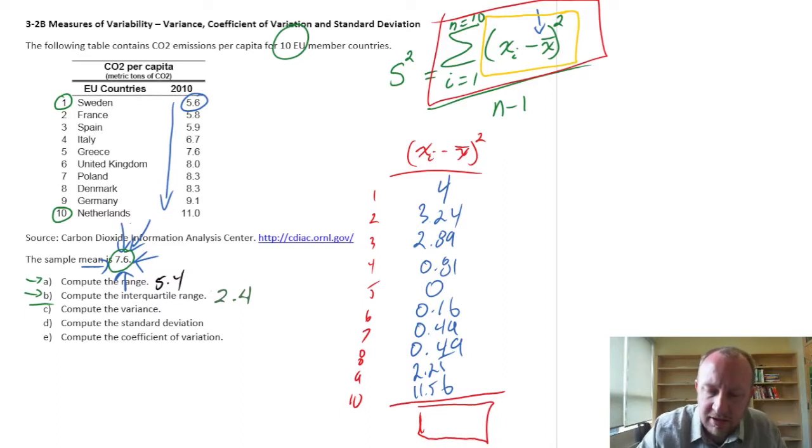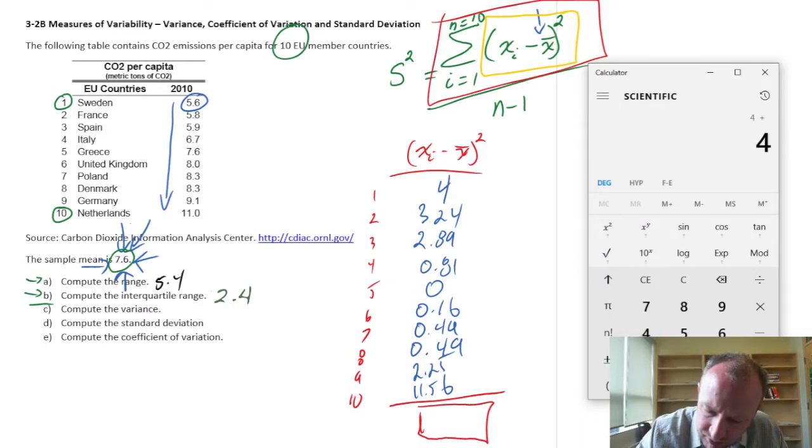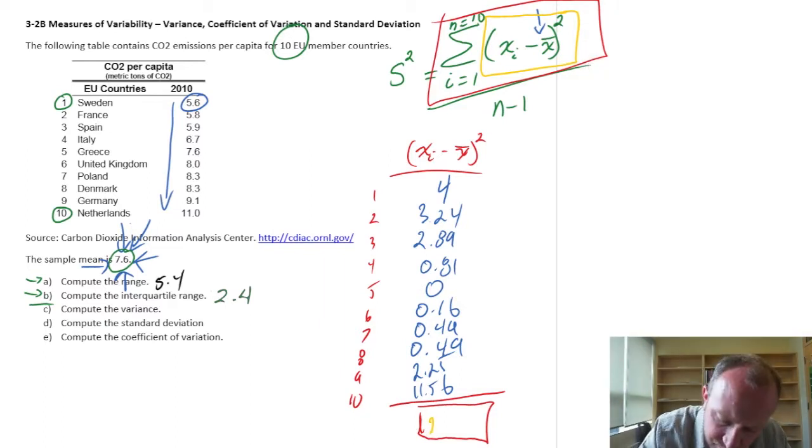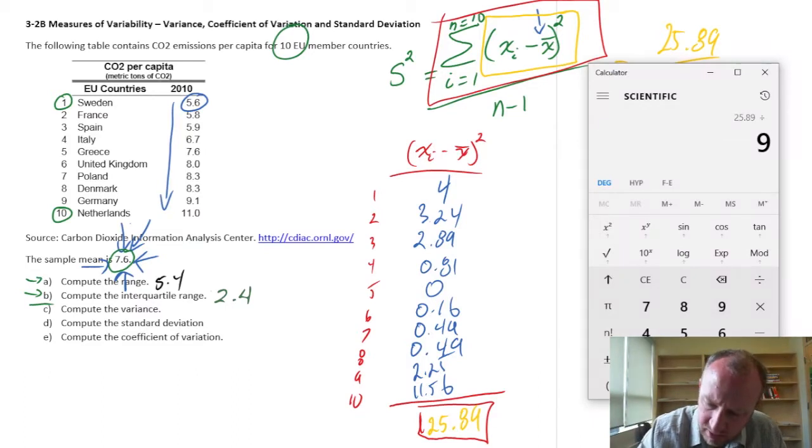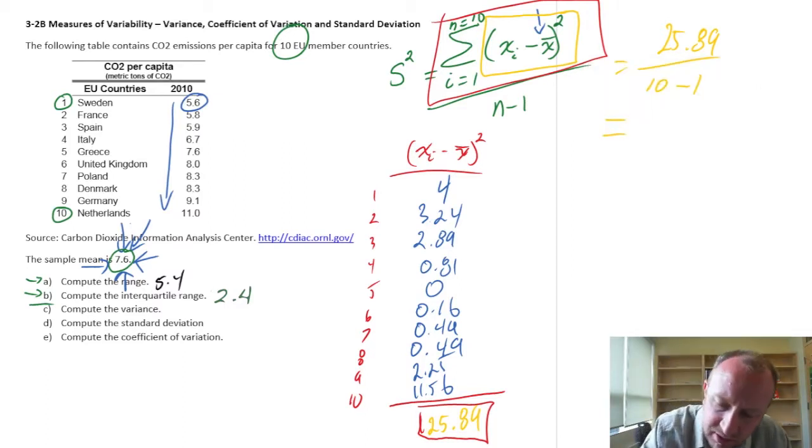So we've calculated what's in the yellow rectangle, now we're going to add all of those together, and that will give us our numerator. So if I start at the top, 4 plus 3.24 plus 2.89, 2.89, plus 0.81, plus 0, plus 0, plus 0.16, plus 0.49 twice, plus 2.25, and 11.56. So 25.89, so that's our numerator, 25.89 divided by n minus 1, that's 10 minus 1. Last step, divide by 9, let's call it 2.9. So there's, finally, there's our variance.